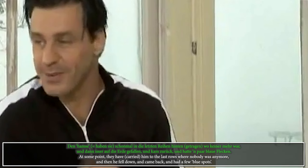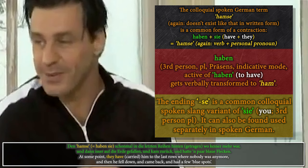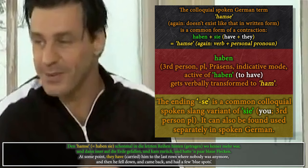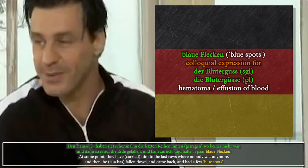'Hamse' is another contraction — a colloquial combination of 'haben' and 'sie', meaning 'they have', for the third-person plural Präsens, indicative mode, active. 'Sie haben' — the ending '-se' is 'sie', and it can also be found or used on its own in spoken German: 'da sind se', meaning 'there they are'. 'Issa' is similar — it's a contraction of 'ist er', 'he is', where the consonant T gets dropped. Also, 'blaue Flecken' — blue spots — is the common German colloquial, non-scientific term for a subcutaneous Bluterguss, meaning hematoma or effusion of blood.